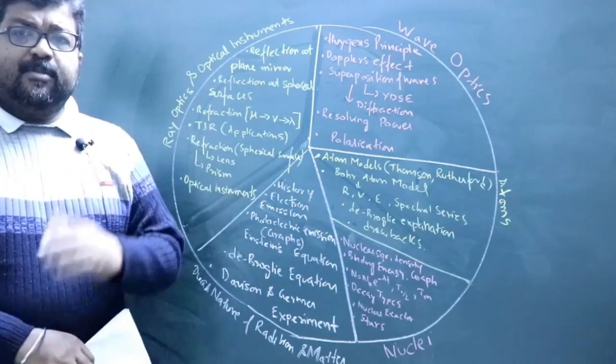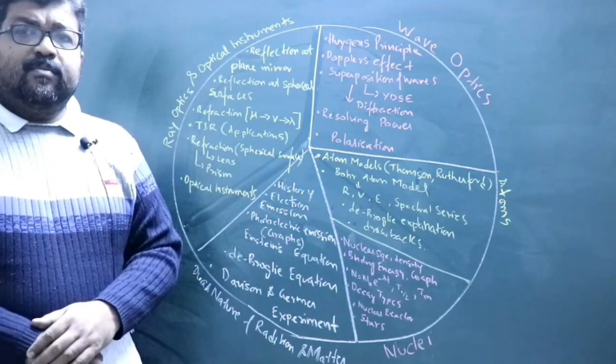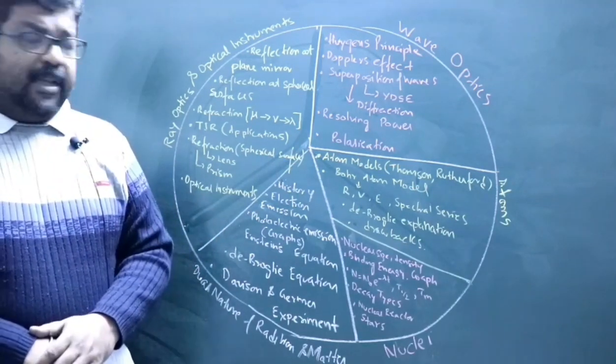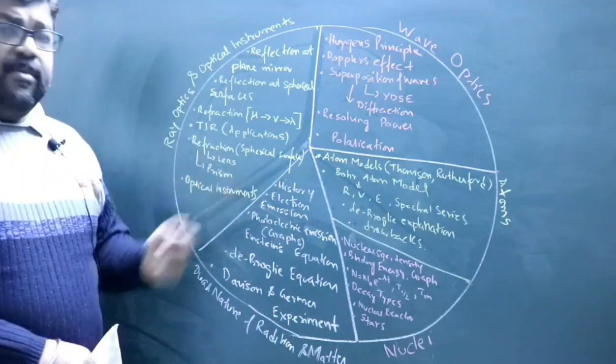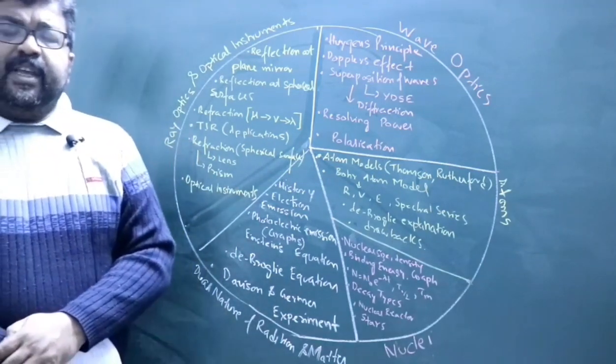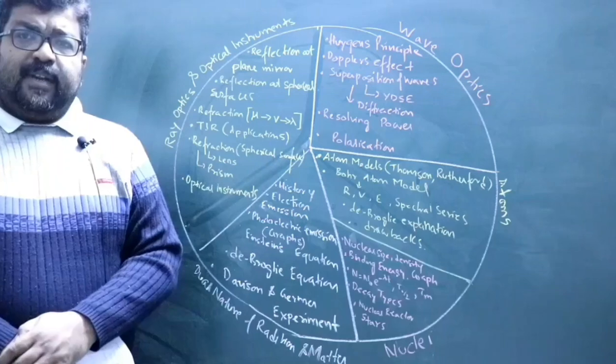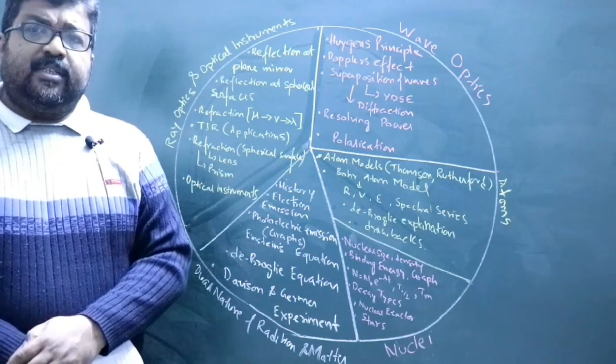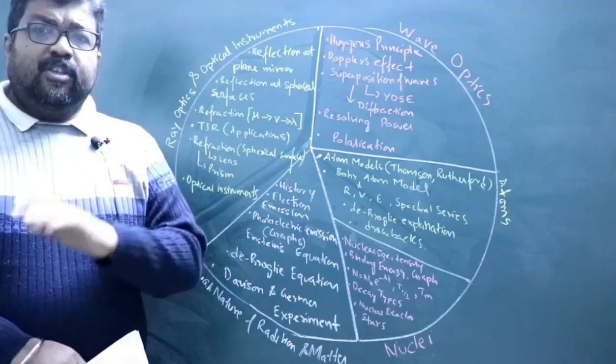Then derivation of the lens formula, the lens maker's formula, the expression for magnification - you must practice both the derivation as well as the application of these formulae. Then you have refraction from prism, the formula of refractive index, the formula for deviation of light from prism. You must also study the two conditions: deviation without dispersion and dispersion without deviation.